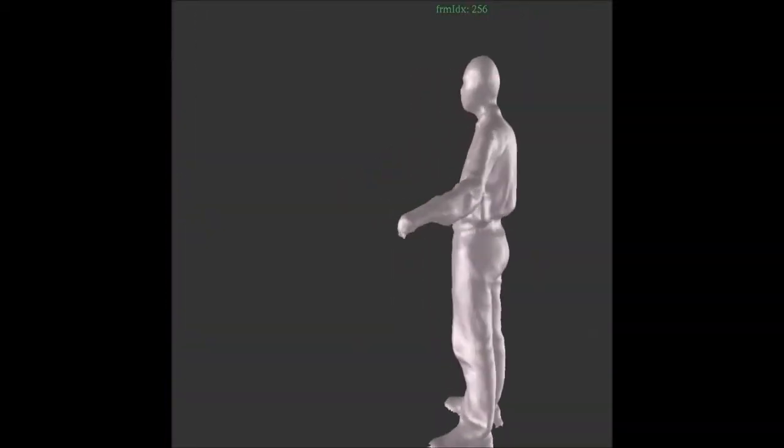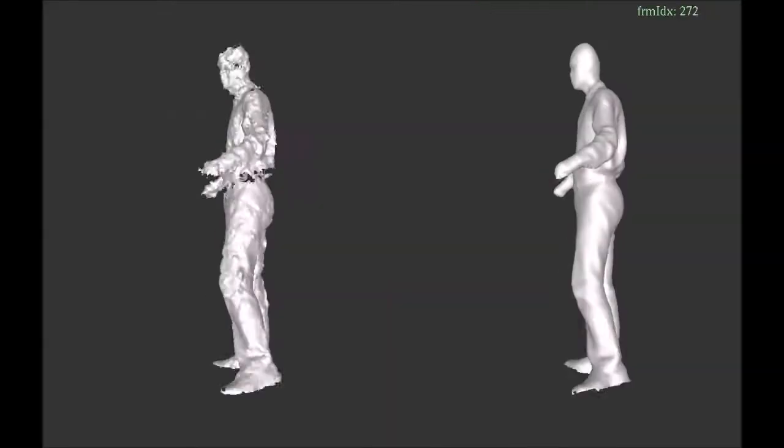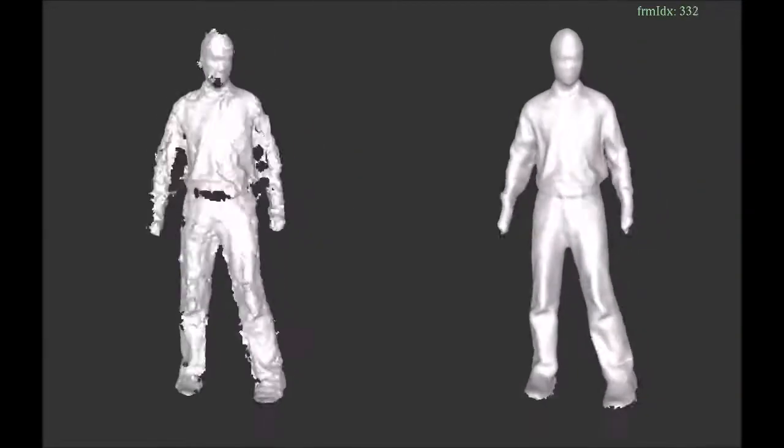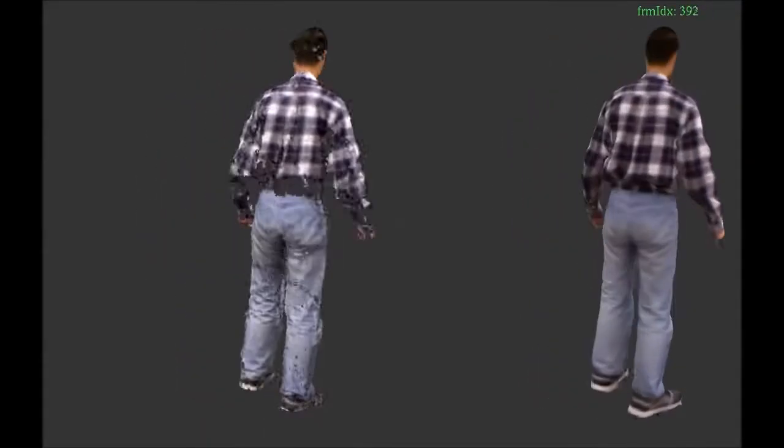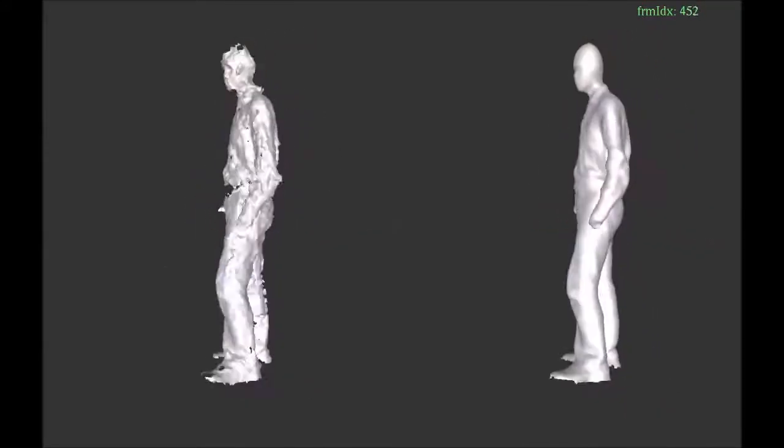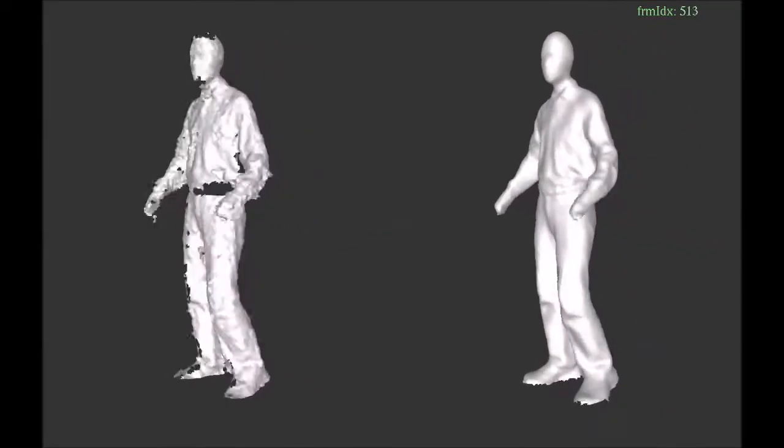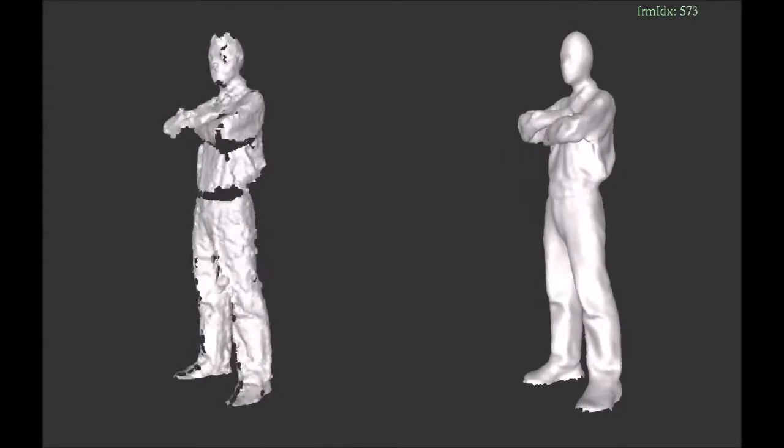After a complete model is achieved, we deform the model to later observations. The left side shows the original output from 8 Kinect cameras. The right side shows the deformed model. Note that our system works decently well for difficult gestures, such as crossing one's arms.